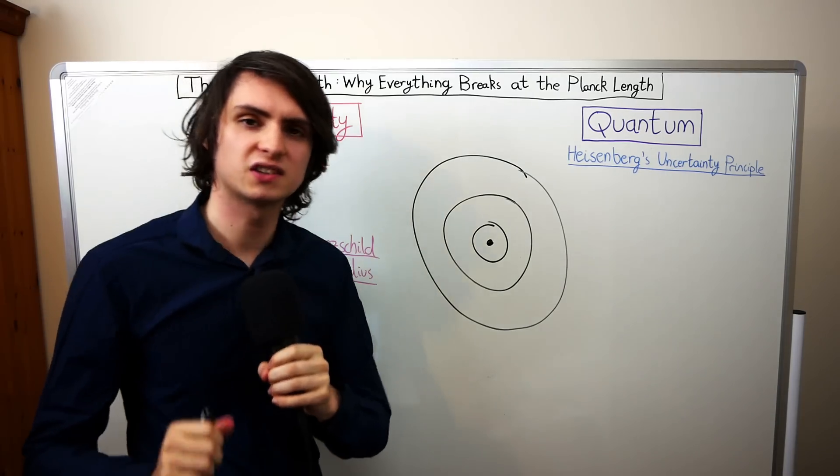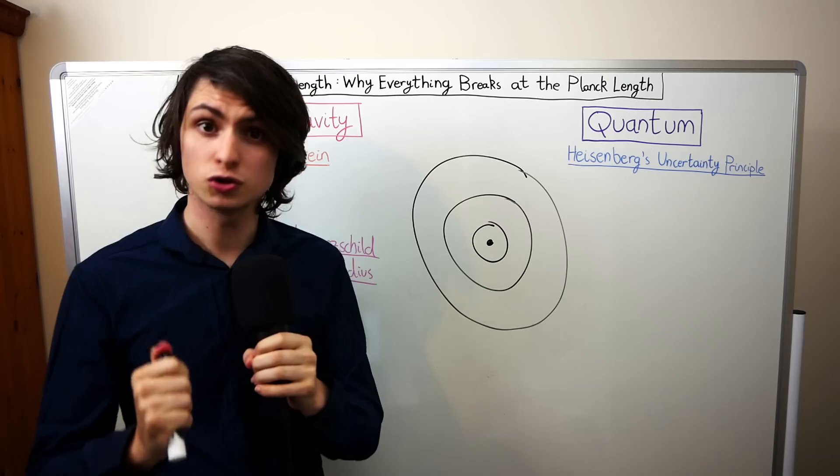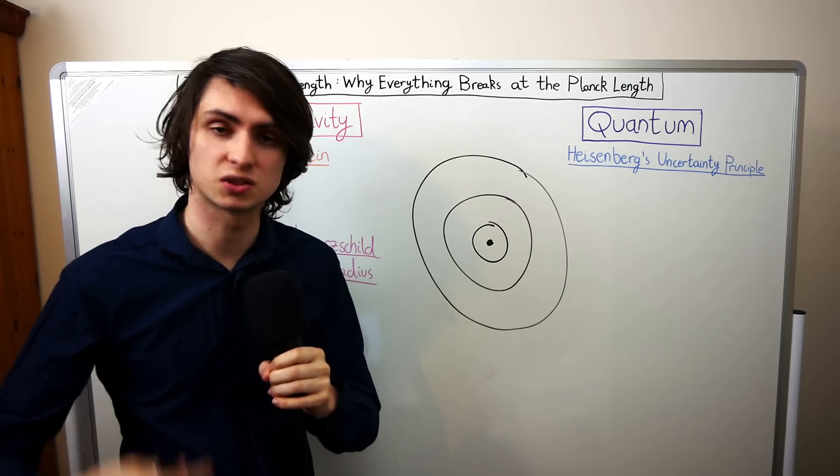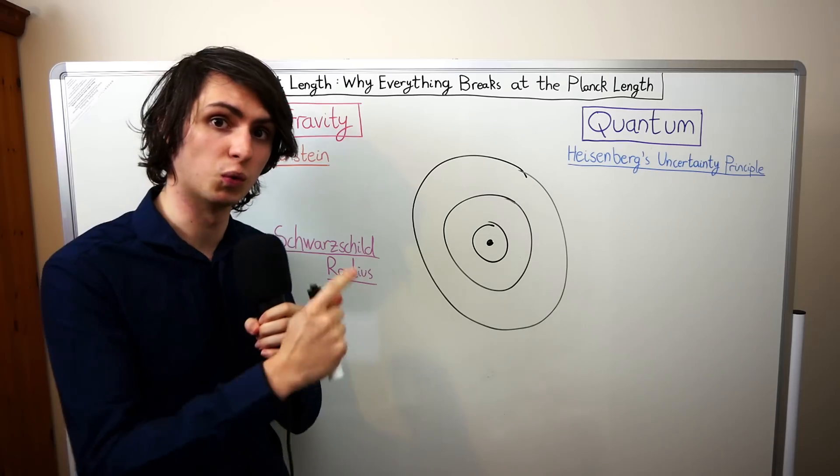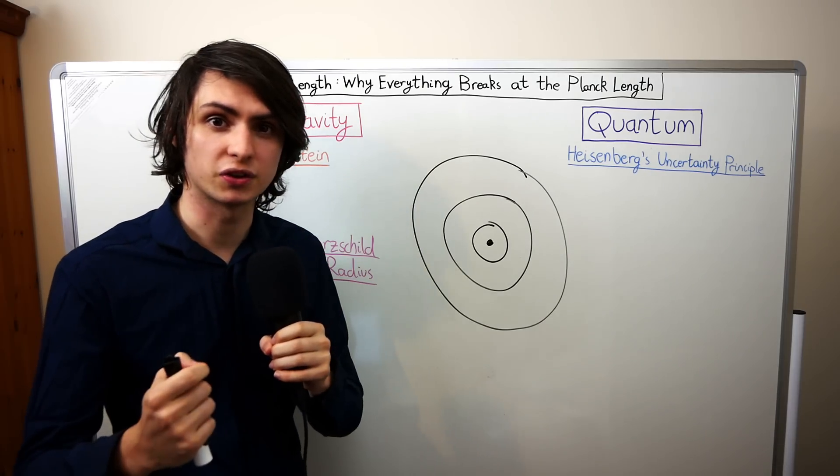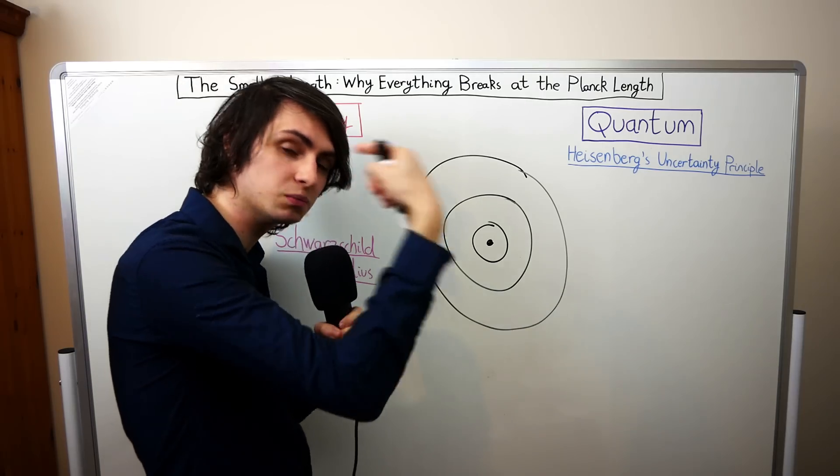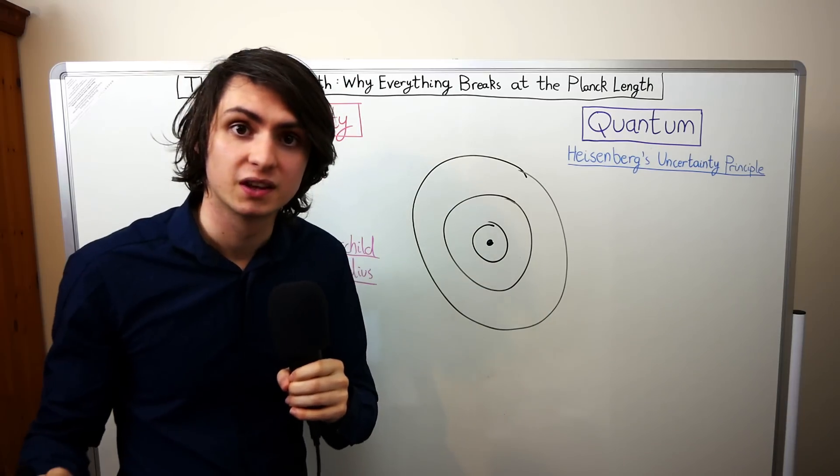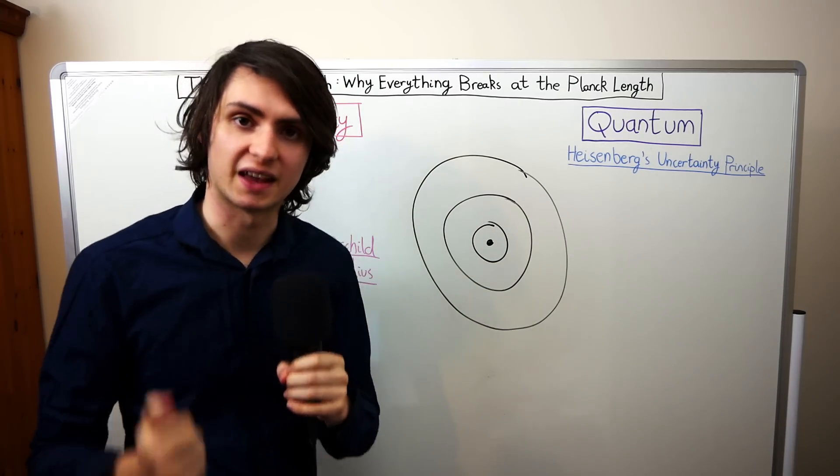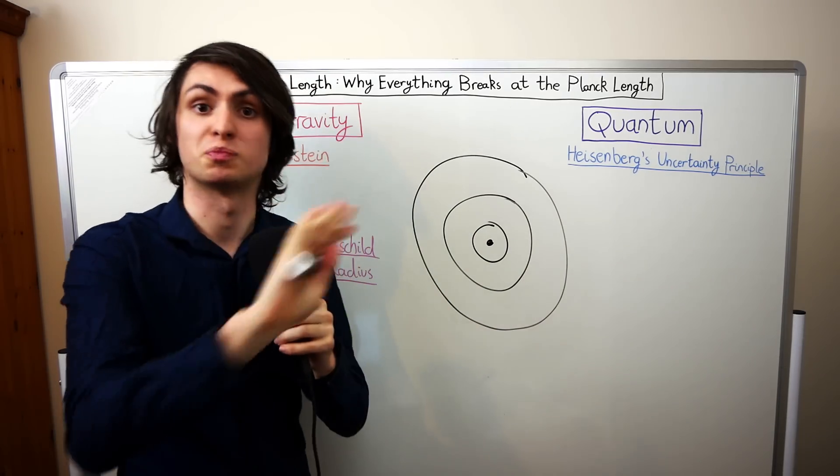This is a fascinating question but it's not one that the physics of today can fully answer. What we do know however is that there is indeed a smallest region of space in which the laws of physics as we know them still work. It turns out that there's a smallest region of space such that if we were to try and go any smaller the laws of physics as we know them just break. This is what's known as the Planck length. It's the smallest length before all physics just breaks.